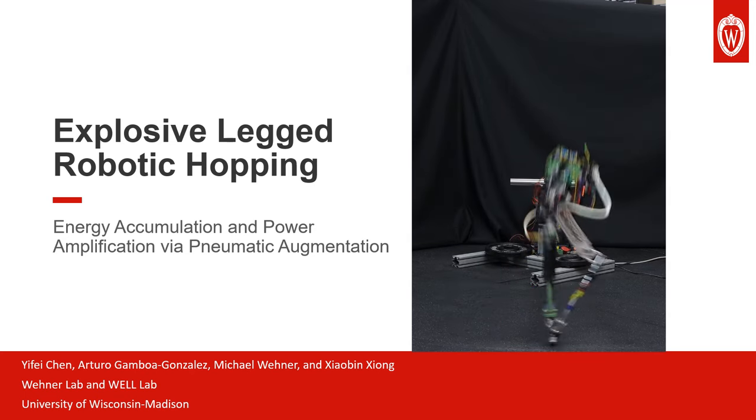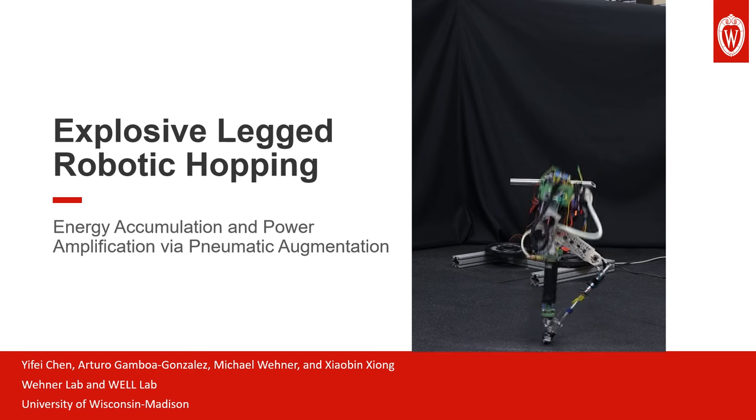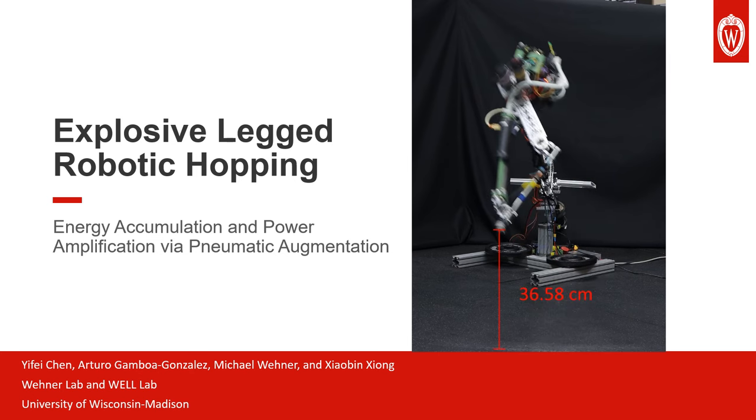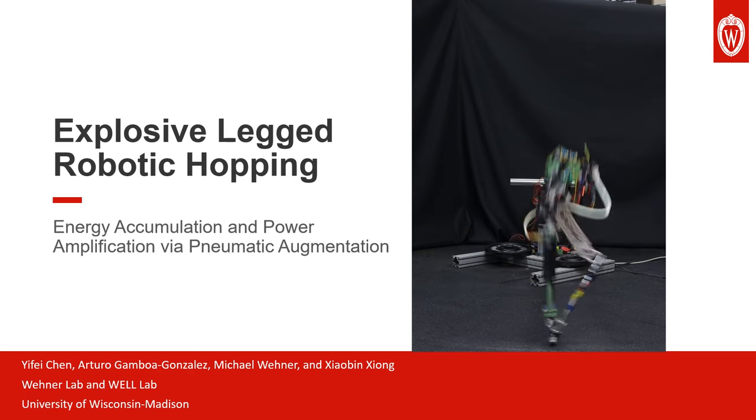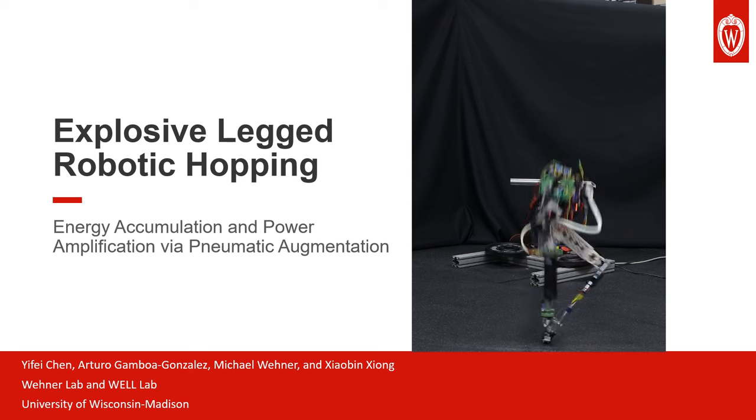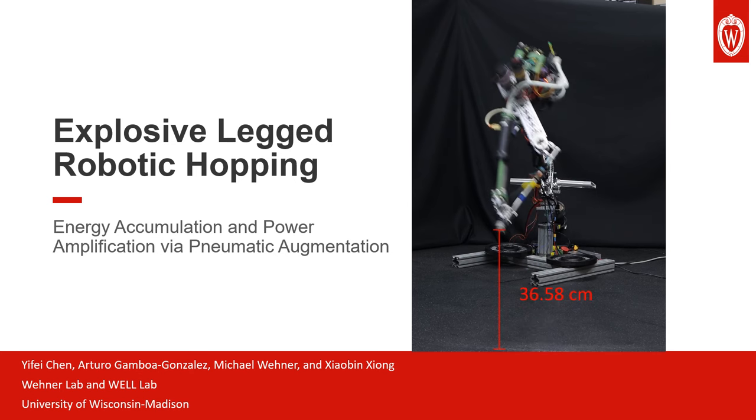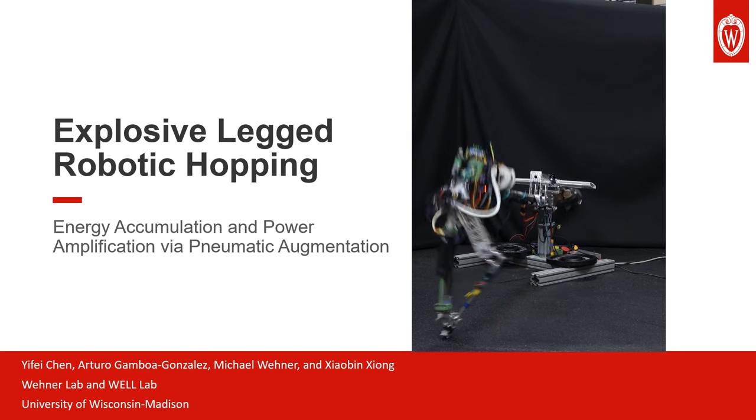We implement the proposed framework on a one-legged hopping robot and show that with the appended pneumatic system, the robot is able to harvest and store energy continuously from periodic hopping motion and then release the stored energy as needed to perform highly explosive tasks such as jumping over large obstacles.